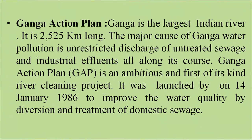Ganga Action Plan. The Ganga is the largest Indian river, running for about 2,522 kilometers. The major cause of Ganga water pollution is unrestricted discharge of untreated sewage and industrial effluents all along its course. The Ganga Action Plan is an ambitious, first-of-its-kind river cleaning project launched on 14th January 1986 to improve water quality by diversion and treatment of domestic sewage. Other objectives include control of pollution from agricultural runoff, human defecation, cattle grazing, and disposal of unburnt or half-burnt bodies, as well as research and development to conserve biotic diversity of the river and development of new sewage treatment technology.